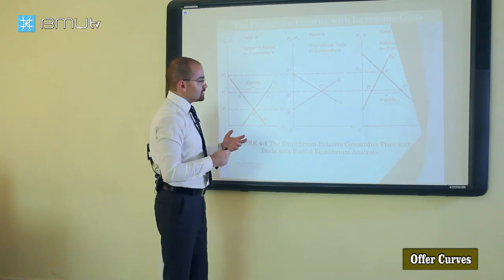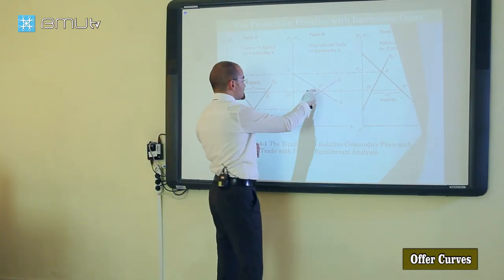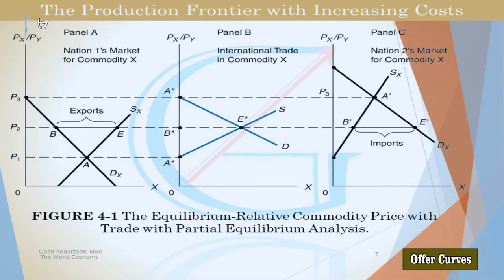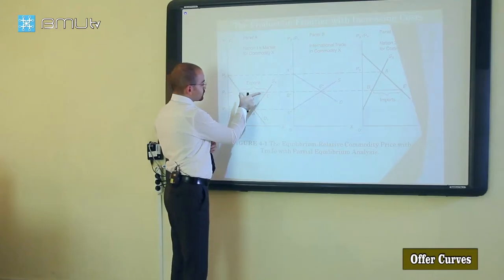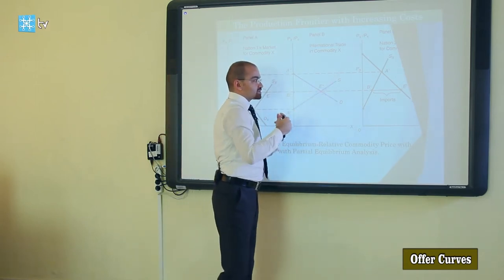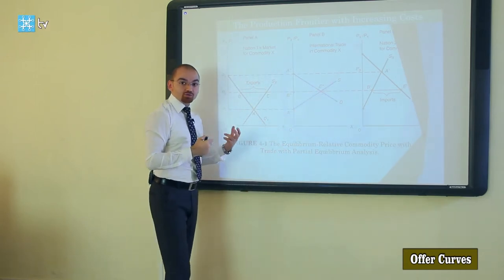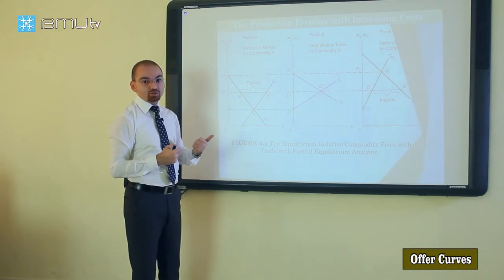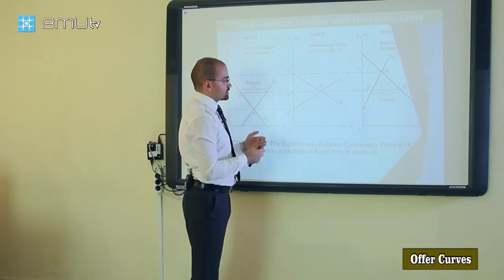Why is A-star the equilibrium price? Because at this point, when our price equals P2, the quantity of exports equals the quantity of imports. Nation 1 agrees to export this amount of the product to nation 2, and nation 2 is ready to accept that amount from nation 1. Therefore, it is the international equilibrium price, and this completes our first target.